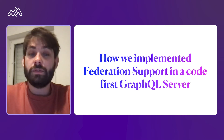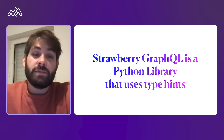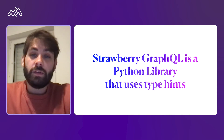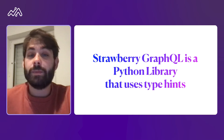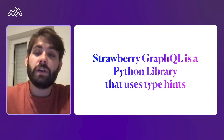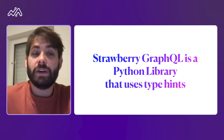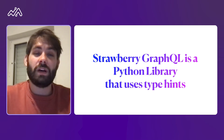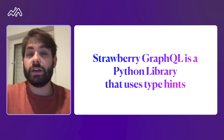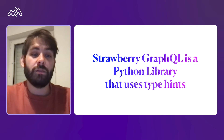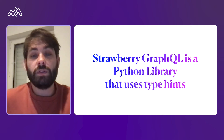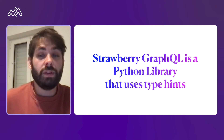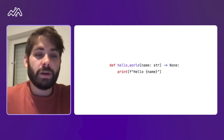But before doing that, let me introduce what Strawberry GraphQL is. Strawberry GraphQL is a Python library that I created a few years ago when I wanted to experiment with Python's type hints. Strawberry GraphQL makes use of Python type hints to allow you to easily create GraphQL types and APIs from Python code. Type hints in Python basically allow you to annotate Python code with types, so let's see an example of that.